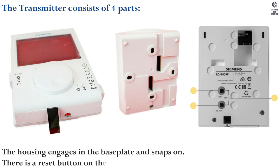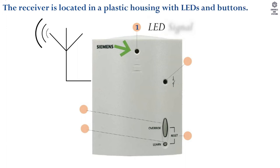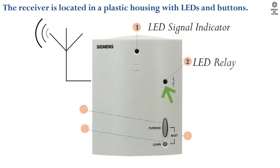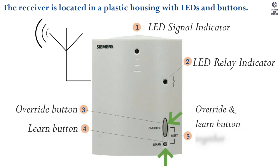There is a reset button on the rear of the transmitter. The receiver is located in a plastic housing with LEDs and buttons. Receiver elements: 1. LED signal indicator. 2. LED relay indicator. 3. Override button. 4. Learn button. 5. Override and learn button together for reset function.